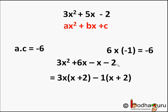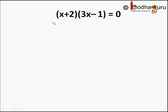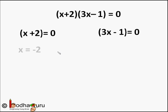Now 3x is common in the first two terms, so it becomes 3x(x + 2), and -1 is common from the last two terms, giving -1(x + 2). So it becomes (x + 2)(3x - 1). The polynomial is 0 if either factor is 0. If x + 2 = 0, then x = -2. If 3x - 1 = 0, then x = 1/3.